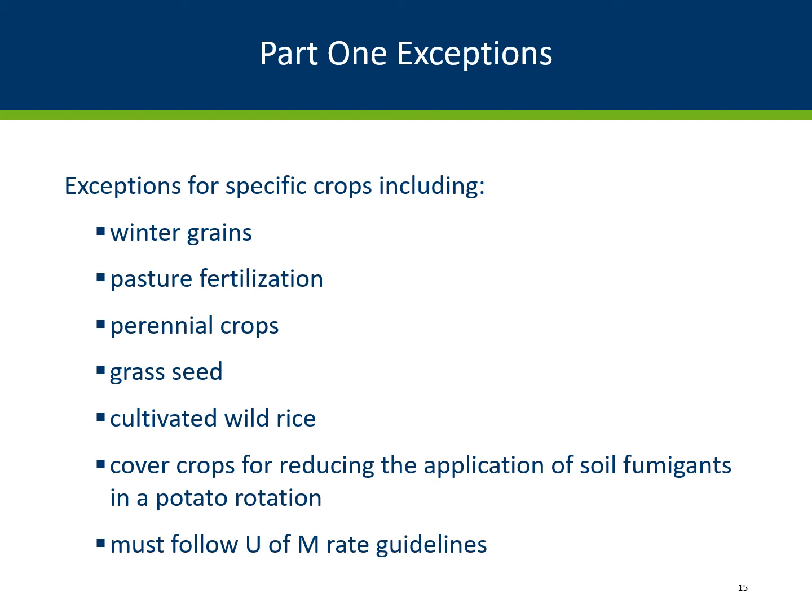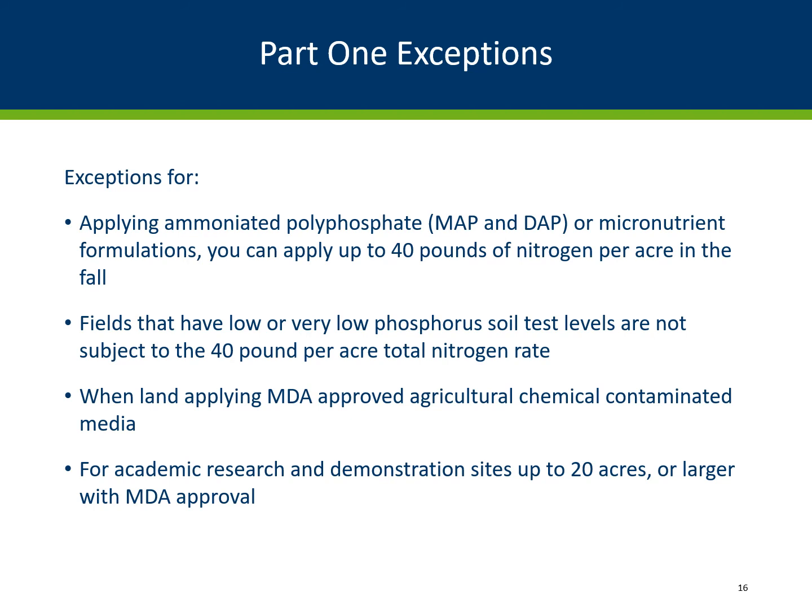There are exceptions where farmers can apply nitrogen fertilizer in the fall. To develop this list, the MDA consulted the University of Minnesota and listened to input from public meetings. University of Minnesota nitrogen fertilizer rate guidelines must be followed if farmers fall apply to these crops. There is also an exception for applying MAP or DAP or micronutrient fertilizer formulations. Farmers can fall apply nitrogen as long as the rate does not exceed an average of 40 pounds per acre in a field. Fields that have had a soil analysis completed by a certified lab and determined to have low or very low phosphorus levels are not subject to the 40 pound per acre rate.